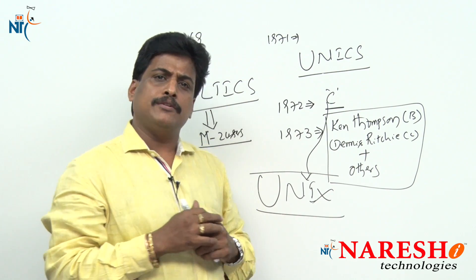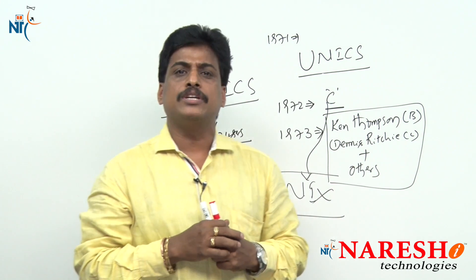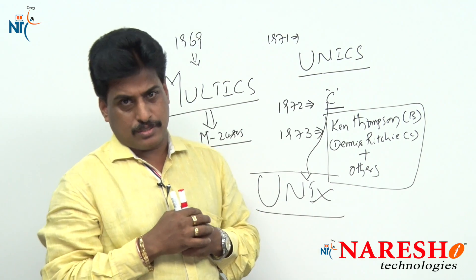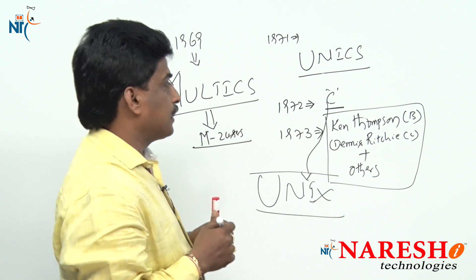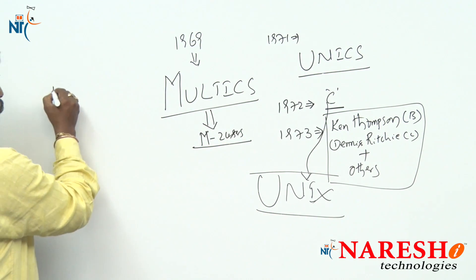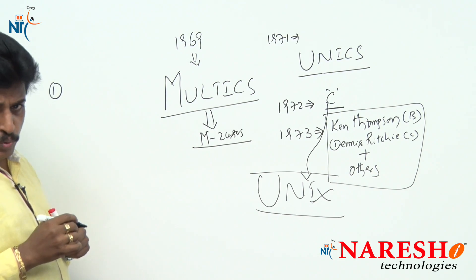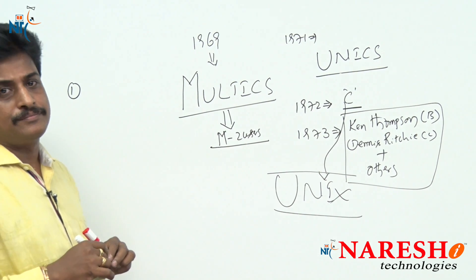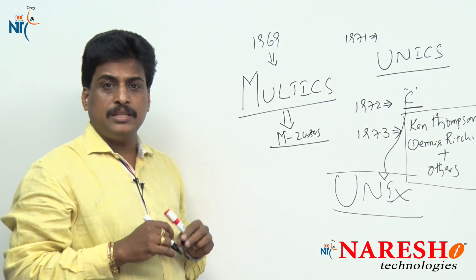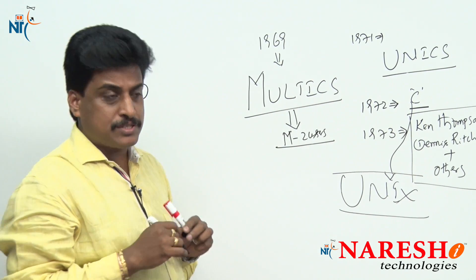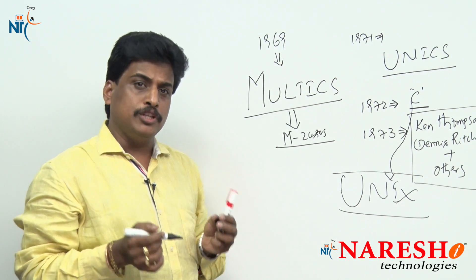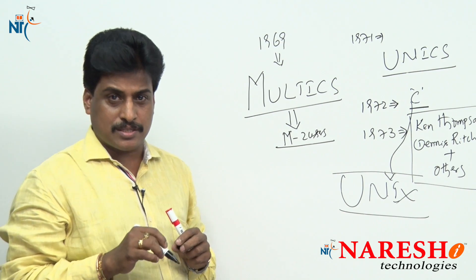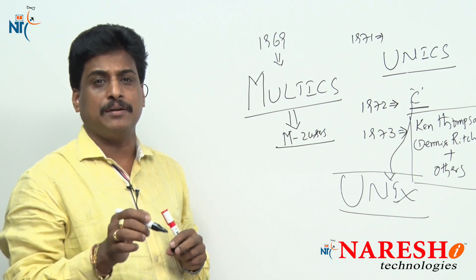Now we will try to observe what are the features of the Unix operating system. There are several features Unix operating system provides. Number one is Multi-User Capability. Multi-User Capability means multiple users can able to access system resources at the same time.